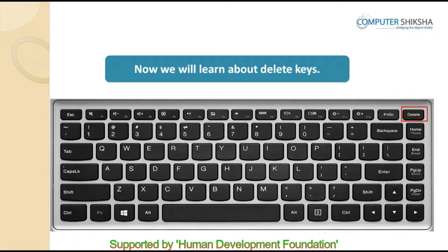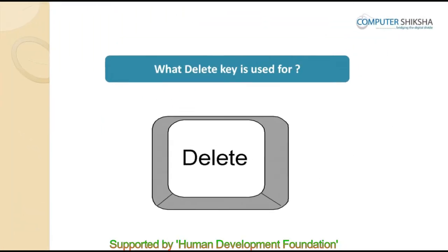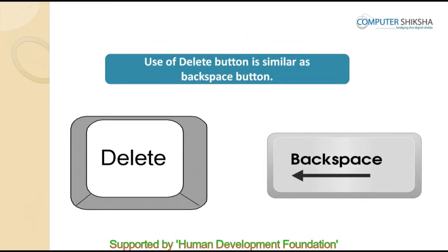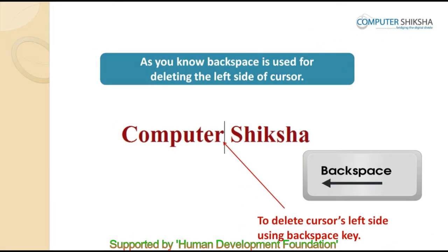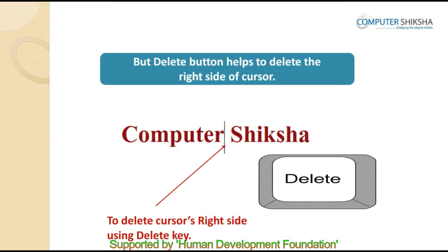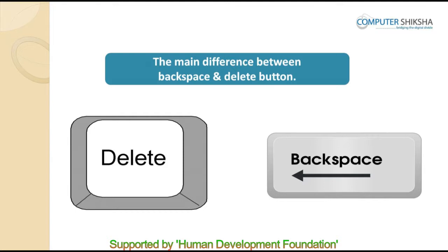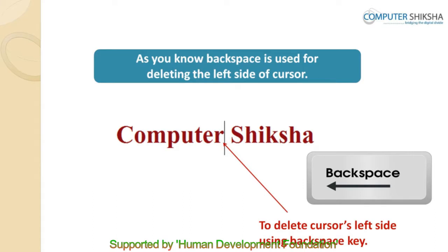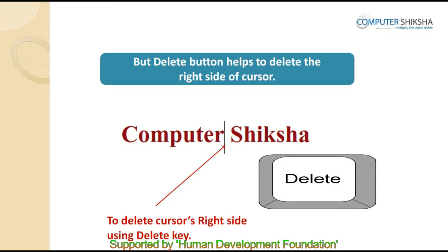Now you will learn about the delete button. While typing, what is the delete button used for? The use of the delete button is much similar to the backspace button — backspace is used for deleting on the left side of the cursor, but the delete button helps you delete on the right side of the cursor. So the main difference is: backspace deletes text on the left side of the cursor, while delete removes text on the right side.